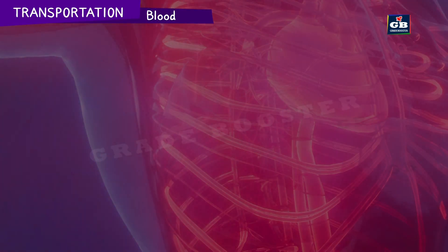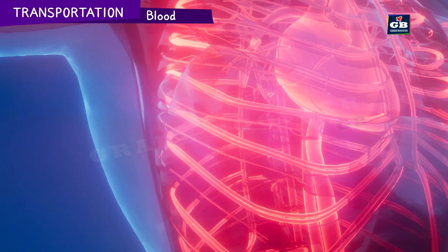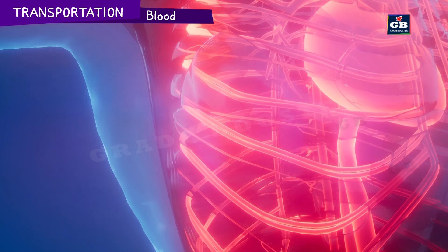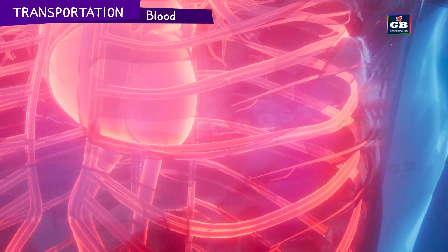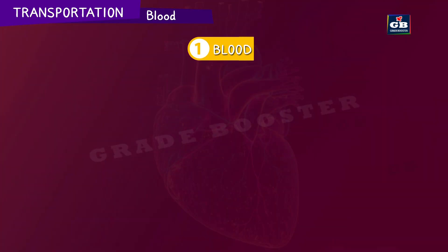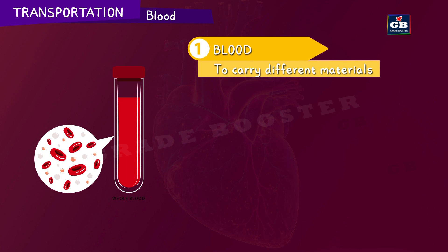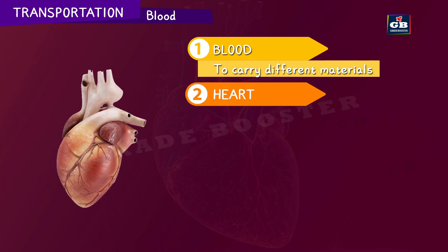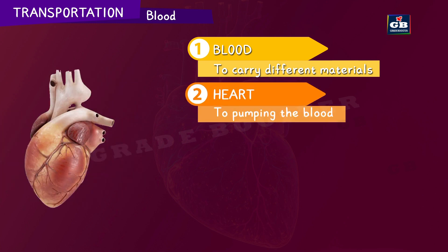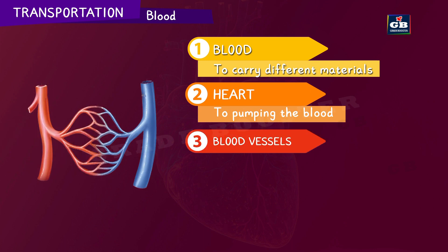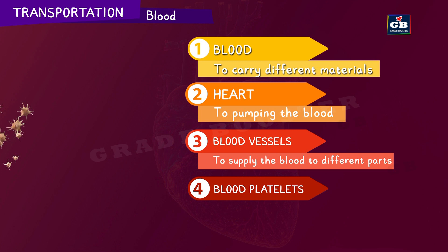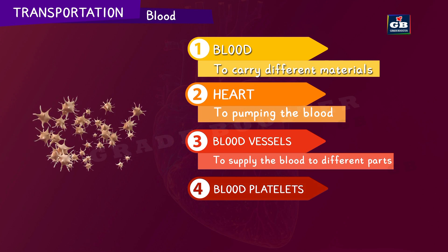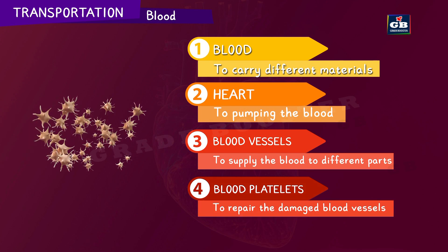Now let us look at the human transport system. Transportation is an important life process. Our transport system is composed of: 1. Blood to transport different materials, 2. Heart to pump the blood, 3. Blood vessels to supply the blood to different body parts, and 4. Blood platelets to repair the damaged blood vessels.